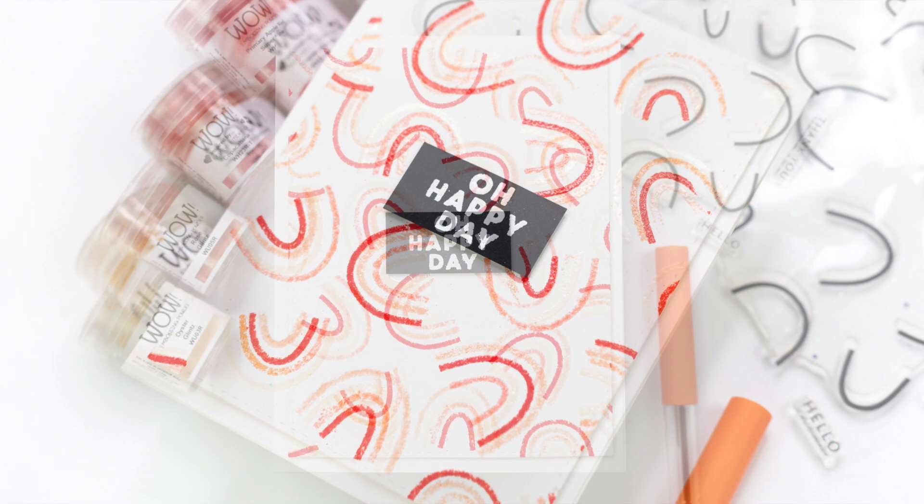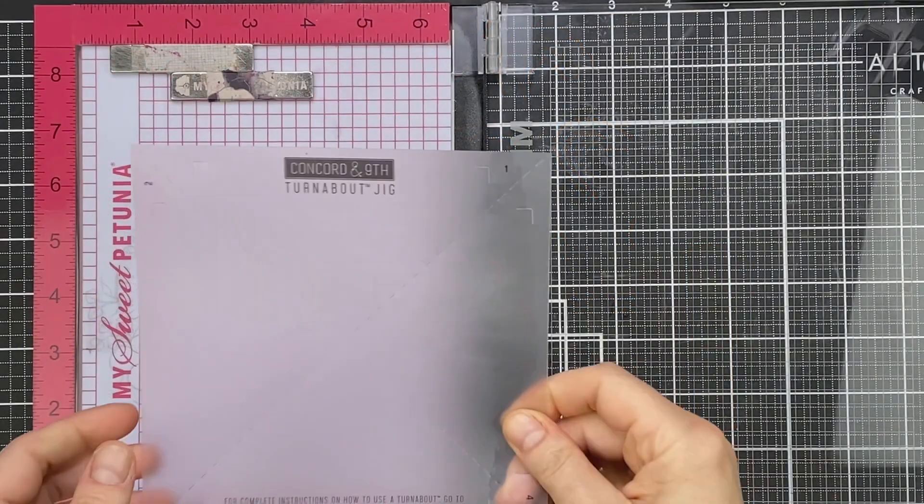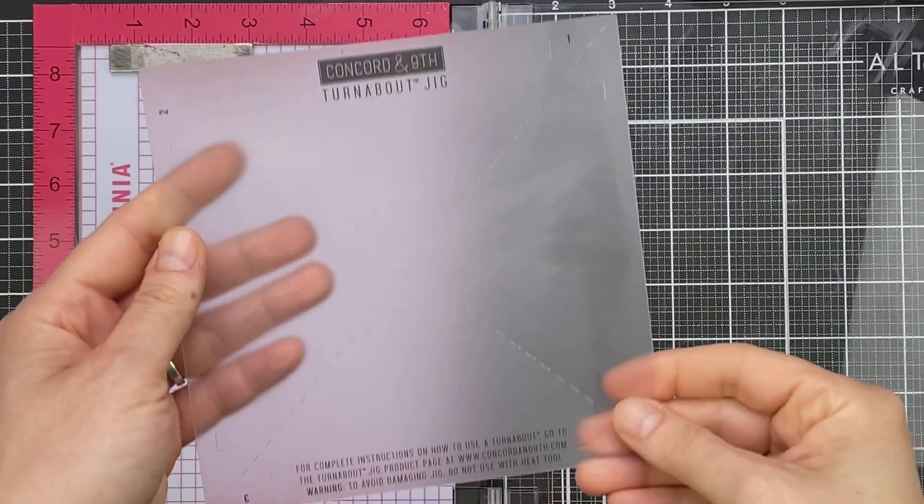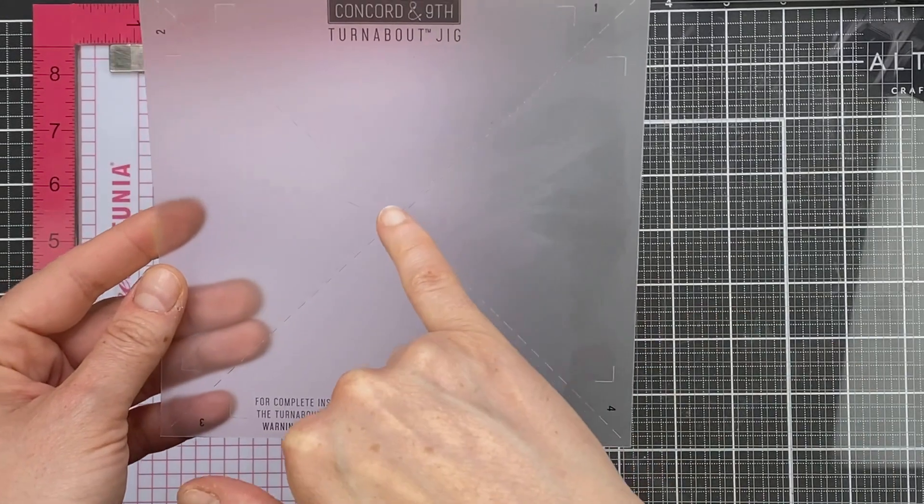Turnabout stamps are ones that you flip around three times and create backgrounds. I'm going to be using this rainbow turnabout stamp from Concord & 9th, and this is actually my second attempt at doing it.